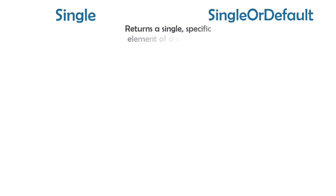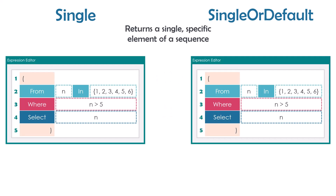As the name suggests, both operators return a single specific element of a sequence. It means I have a sequence containing only one element and I want to get that element from it. Let's see the following query to understand how to use these operators and the difference between them. I have a simple query to get the numbers which are greater than five. The output of this query is a collection containing only one number.